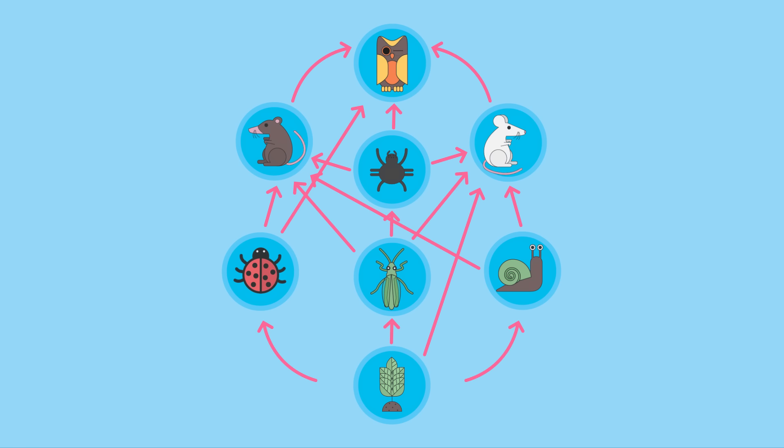When you consider all the food chains in the habitat and join them all together you get a food web, a diagram of the interconnections between lots of organisms. Populations are interdependent on each other and some organisms have more than one predator whilst others don't.